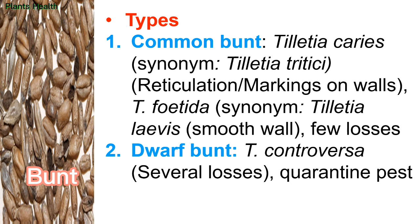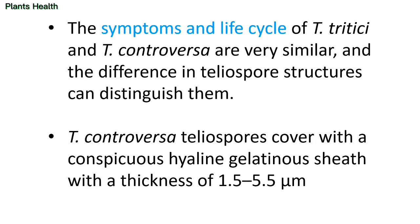The other bunt is Dwarf bunt, caused by the pathogen Tilletia controversa. It causes severe losses and is a quarantine pest. The symptoms and life cycle of Tilletia tritici and Tilletia controversa are very similar, and the difference in teliospore structures can distinguish them. Tilletia controversa teliospores are covered with a conspicuous hyaline gelatinous sheath with a thickness of 1.5 to 5.5 micrometers.